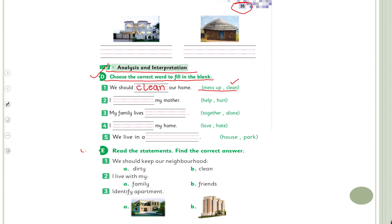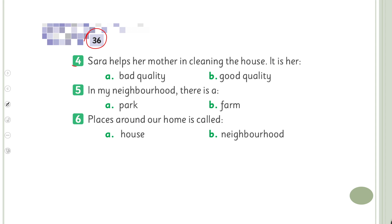Now read Exercise E — Read the statements and find the correct answer. 'We should keep our neighborhood clean or dirty?' — Clean. 'I live with my family or friends?' — Family. 'Identify the apartment — A or B?' — B. Now on page number 36, Number 4: 'Sarah helps her mother in cleaning the house — it is her good quality or bad quality?' — Good quality. 'In my neighborhood there is a park or farm?' — In my neighborhood it is a park, so I will go with park.